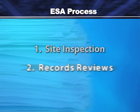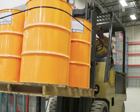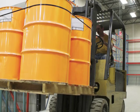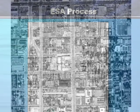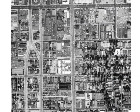Regulatory records may reveal known releases of hazardous substances at or near the property, or risky activities such as hazardous materials handling. Historical records illuminate a property's history and whether previous uses could have contaminated the site.